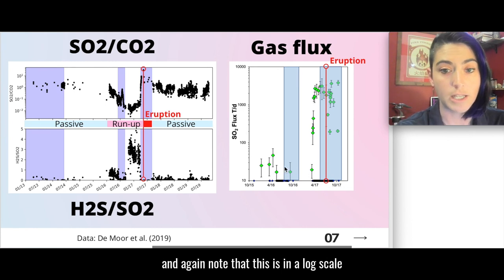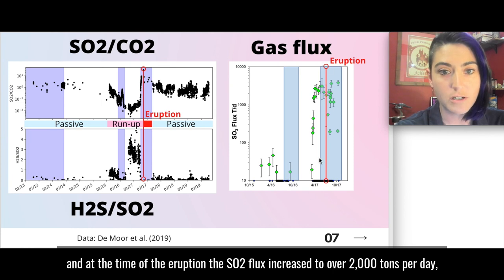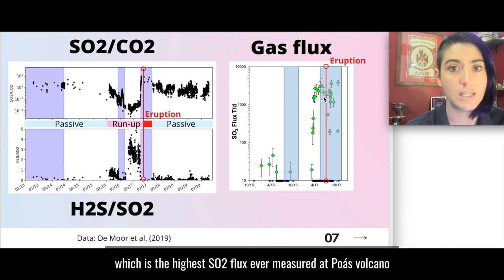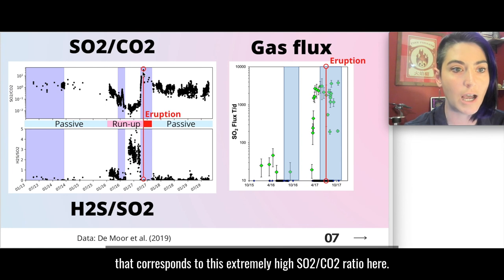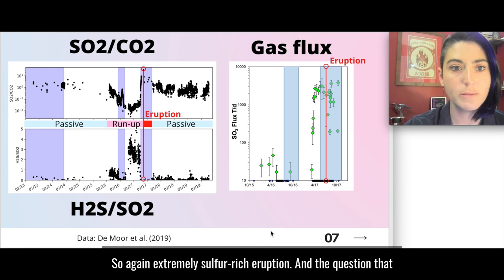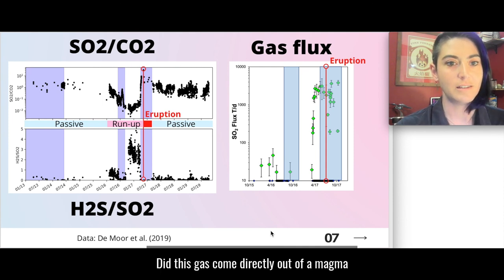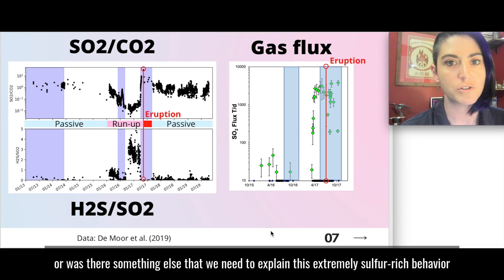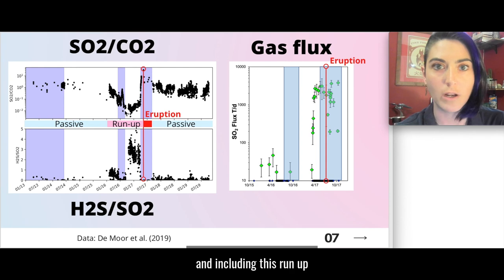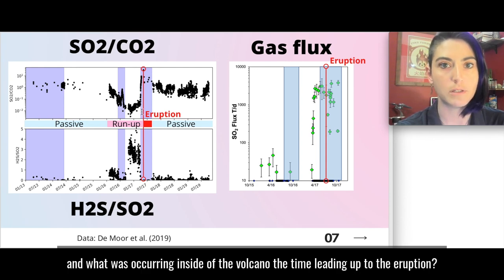And at the time of the eruption the SO2 flux increased to over 2000 tons per day which is the highest SO2 flux ever measured at Poas volcano that corresponds to this extremely high SO2/CO2 ratio here. So again extremely sulfur rich eruption. And the question that we want to ask is how was this gas generated? Did this gas come directly out of a magma or was there something else that we need to explain this extremely sulfur rich behavior? And including this run-up, what was occurring inside of the volcano at the time leading up to the eruption?